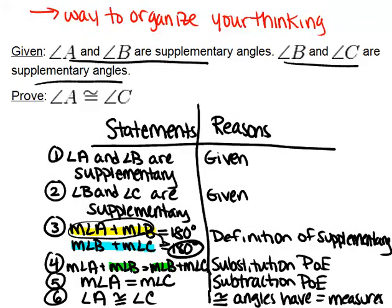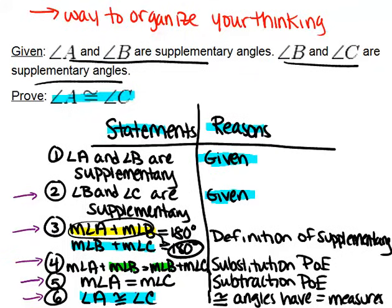A couple of things to notice overall: we started with our statements and reasons columns, then began with the givens — that's always where you want to start. Where you end is with whatever you were trying to prove in the original problem. You go step by step, numbering each logical conclusion, until you reach what you were trying to prove.